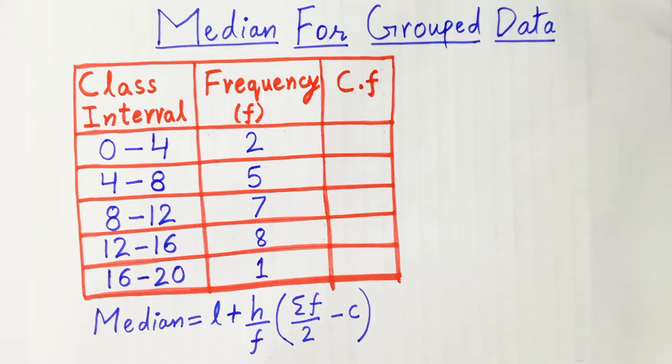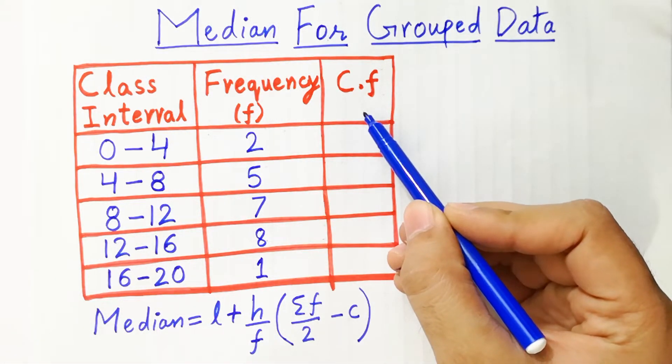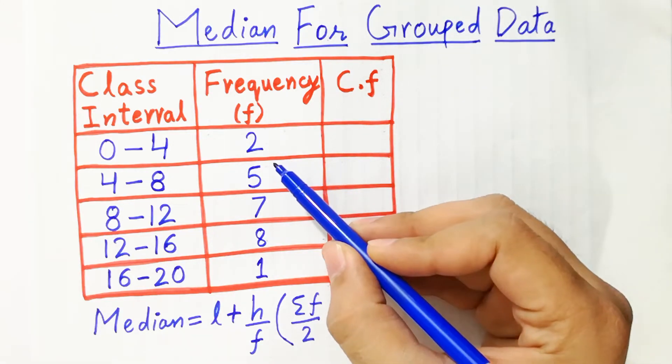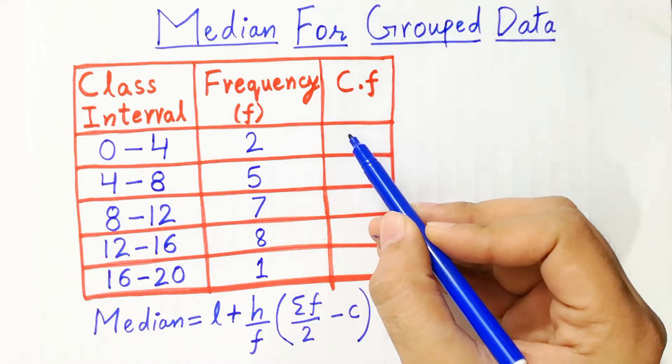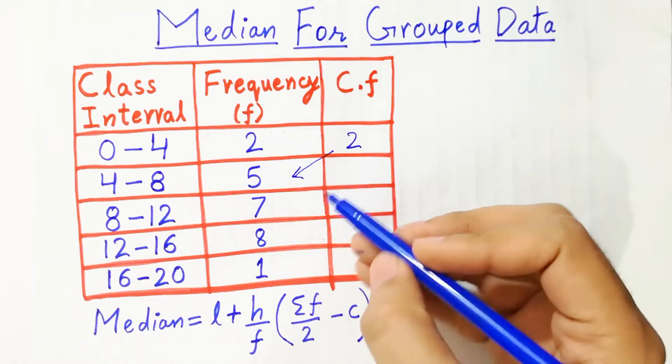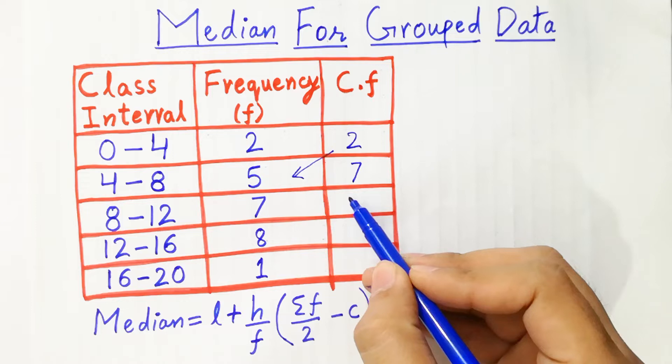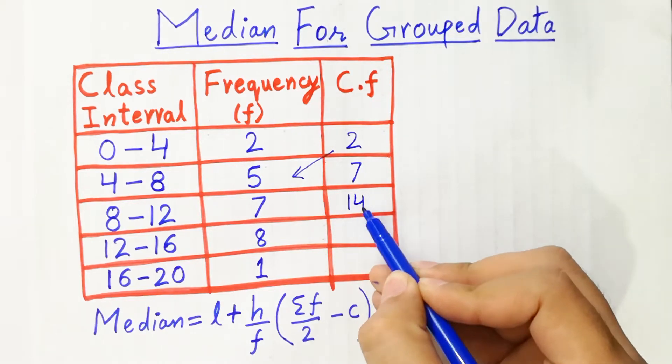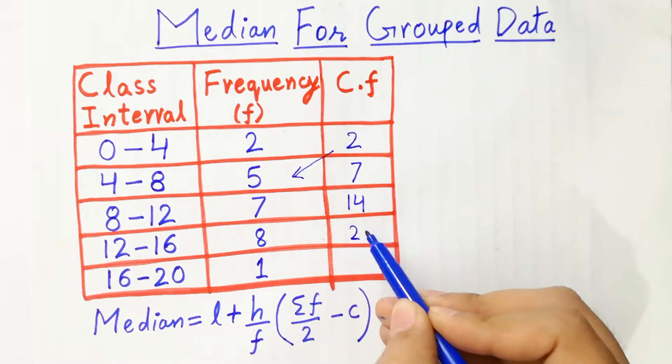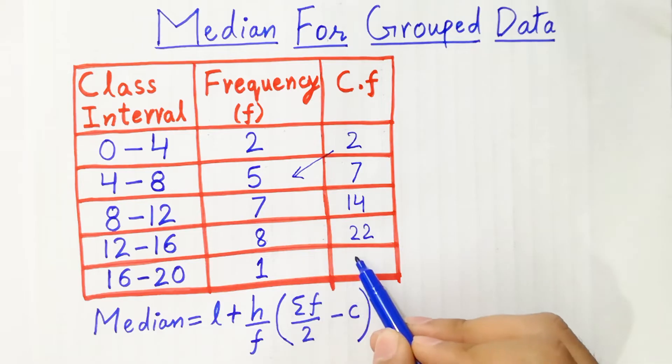The first step is you have to calculate the cumulative frequency, a very simple method. First of all, you have to write the first value as it is, which is 2. Next, 2 plus 5 will be 7, 7 plus 7 will be 14, 14 plus 8 will be 22, and 22 plus 1 will be 23.